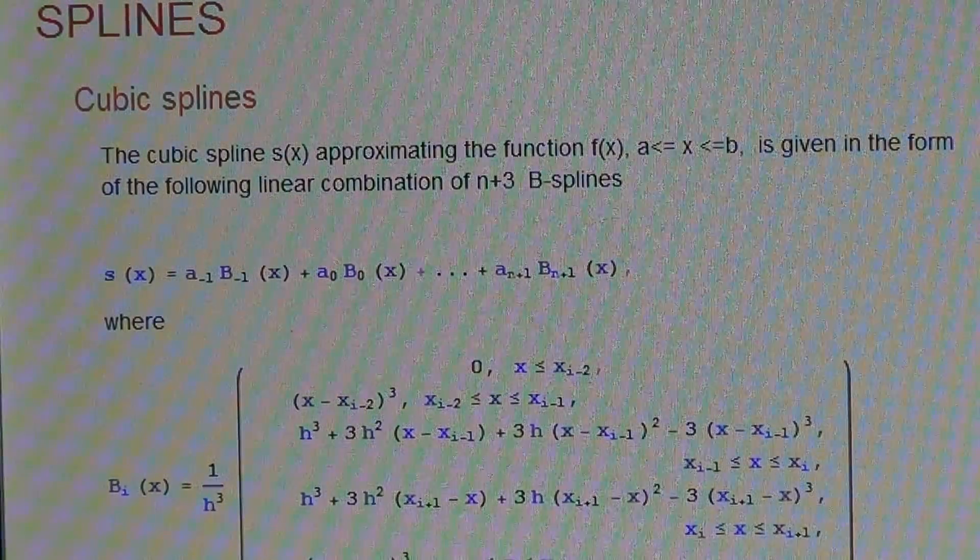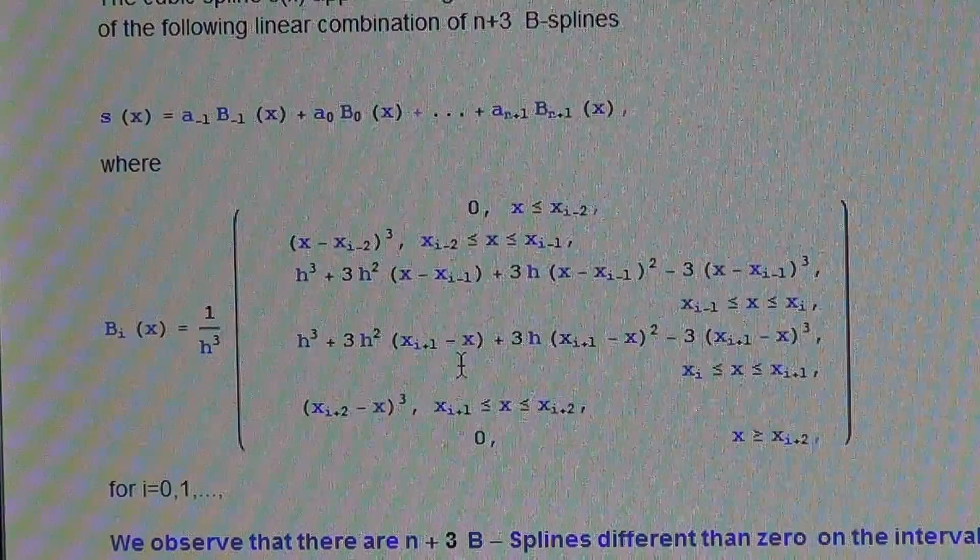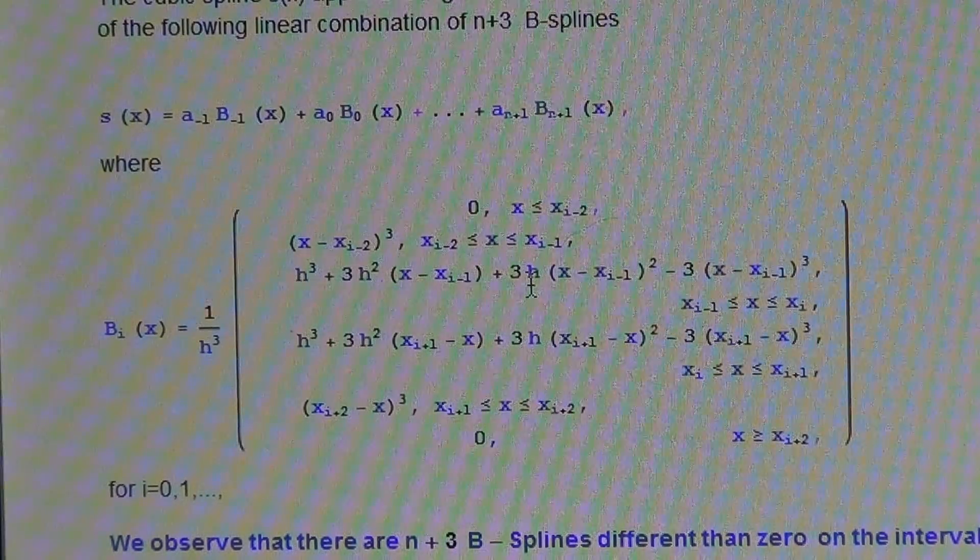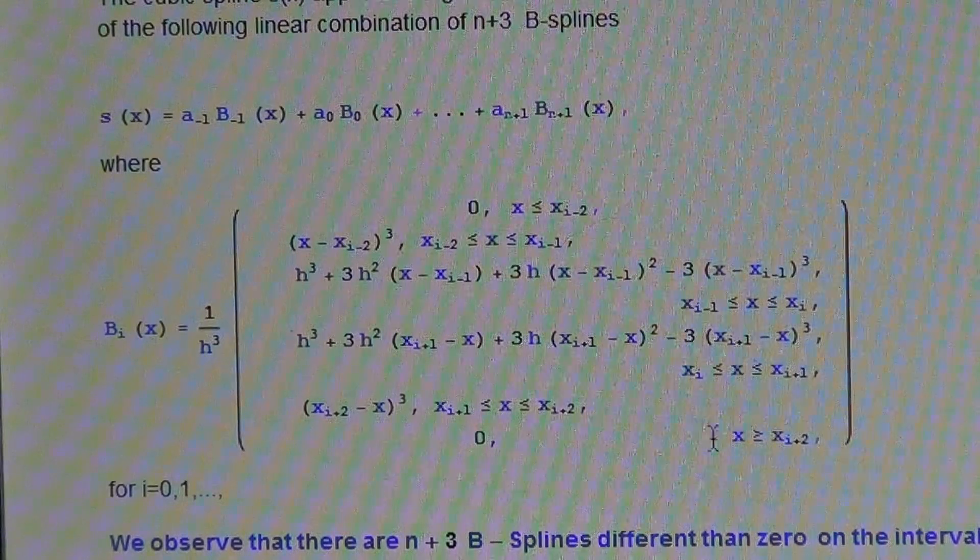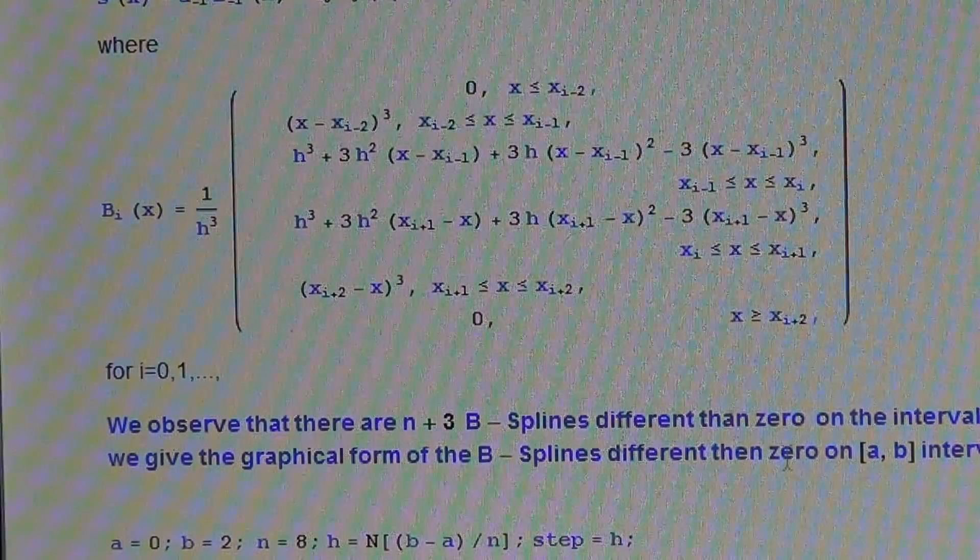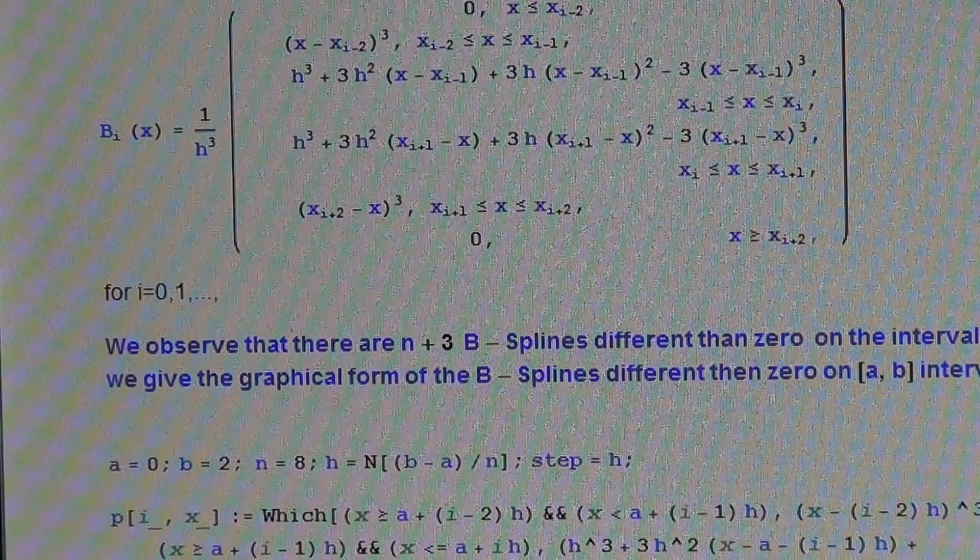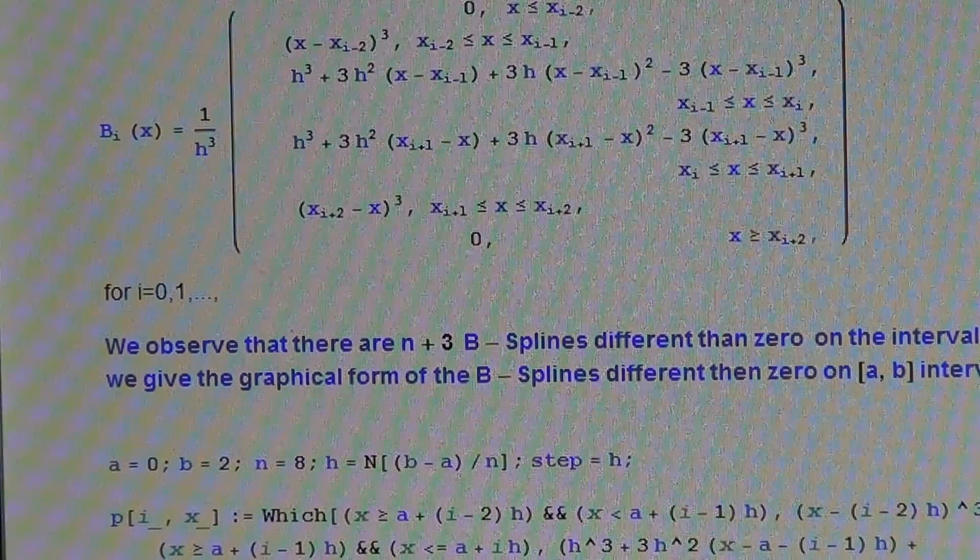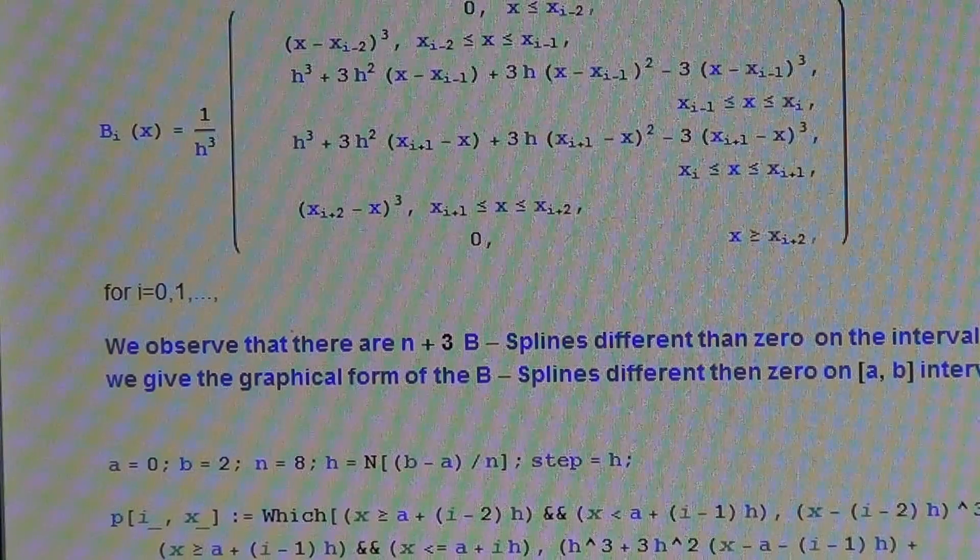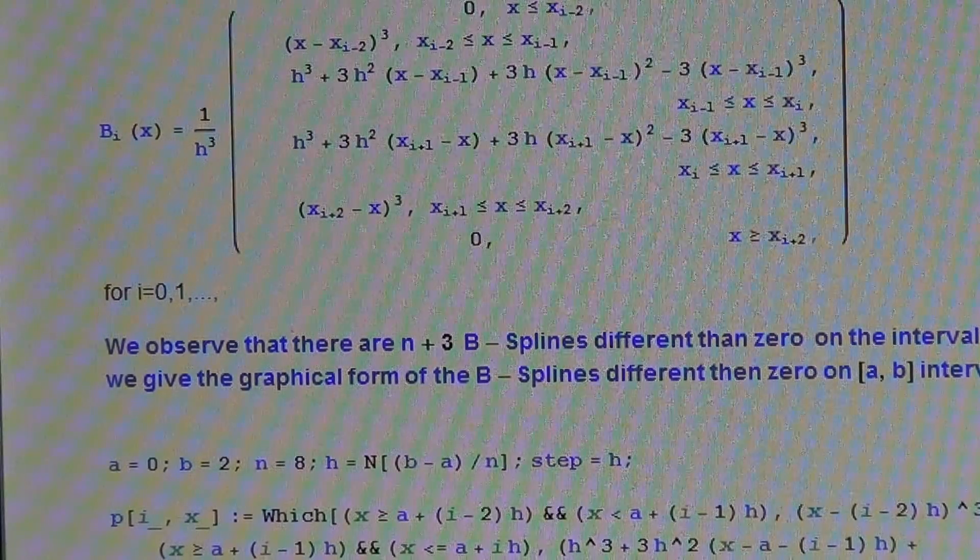Here we have the formula for the B-splines. We presented that in the before lecture. Details of that formula one can read on the page in the PDF file. But now let us write these B-splines in the form of the Mathematica function as n+3 table of n+3 different than zero in the interval [a,b] splines. Below we give the graphical form of splines different than zero on [a,b] interval.